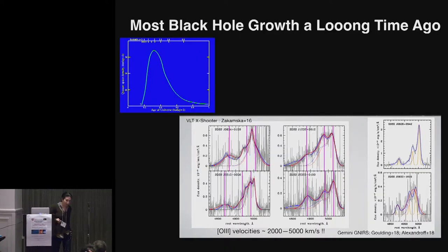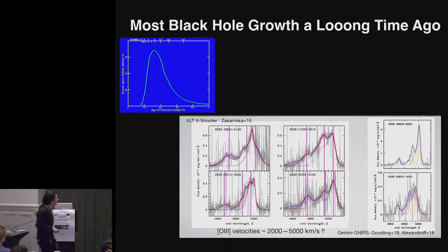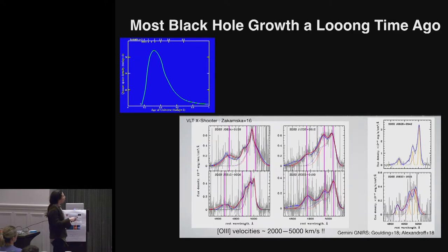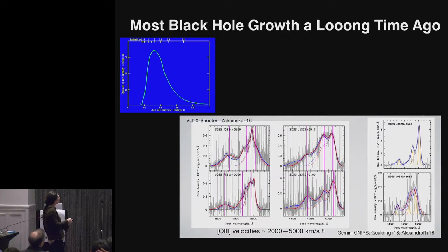Now, that's a galaxy that I can study in great detail because it's relatively close to us at a redshift of 0.1. As you probably know, most of the black hole mass density in the universe was built up almost 10 billion years ago at redshifts closer to 2.